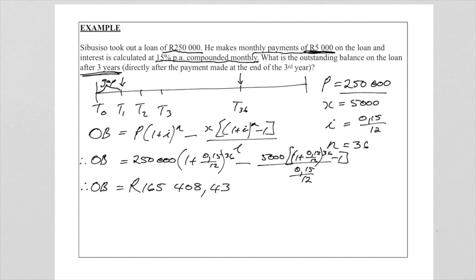So this is the outstanding balance of the loan after three years of payments on a loan of 250,000. I hope this is clear and that you will be able to do problems similar to this one. Thank you.